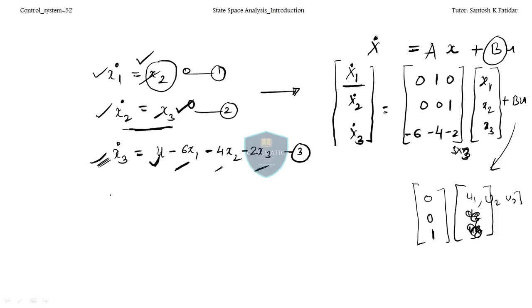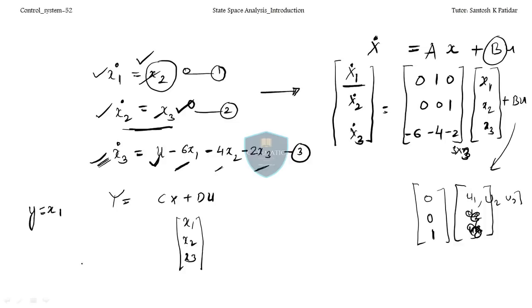Now let us form the output equation: y equals Cx plus Du. Our assumption was y equals x1. So C equals [1, 0, 0] and there is no D matrix here — no direct transmission term. Multiplying [1, 0, 0] by [x1, x2, x3] gives y equals x1. This is the general matrix form.